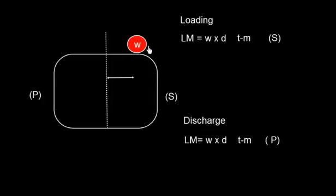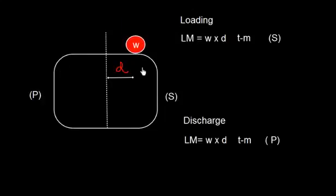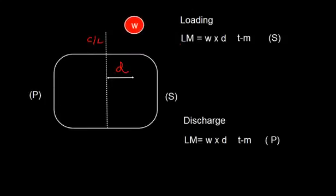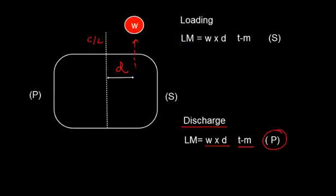Now let us consider the list moment in practice. Suppose a weight w is loaded at a horizontal distance D from the center line on starboard — the list moment is W × D ton-meters on starboard. Similarly, if I discharge something from starboard, the list moment will be W × D ton-meters on the port side, because discharging from starboard creates a port list.